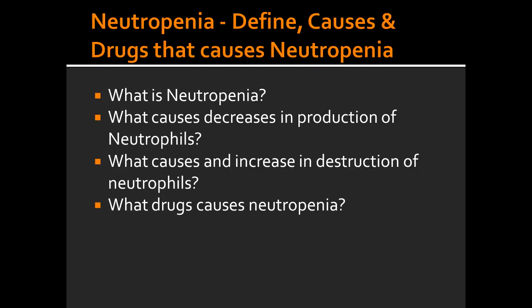Name some of the reasons why there would be a decrease in the production of neutrophils. There would be a decrease in the number of neutrophils being produced in conditions such as megaloblastic anemia, some leukemias and lymphomas. Name a situation where there would be an increase in the destruction of neutrophils. The increase in the destruction of neutrophils that would lead to neutropenia would be in an immune-mediated condition such as Felty's syndrome.